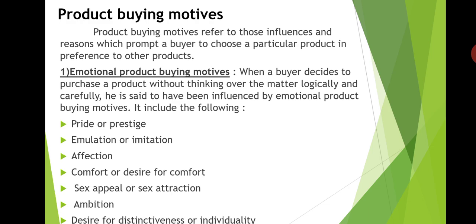Product buying motives may be subdivided into two groups: emotional product buying motive and rational product buying motive. When a buyer decides to purchase a product without thinking over the matter logically and carefully — that is, without much reasoning — he is said to have been influenced by emotional product buying motive. Emotional product buying motives include the following: pride and prestige, emulation or imitation, affection, comfort or desire for comfort, sex appeal or sex attraction, ambition, and desire for distinctiveness or individuality.